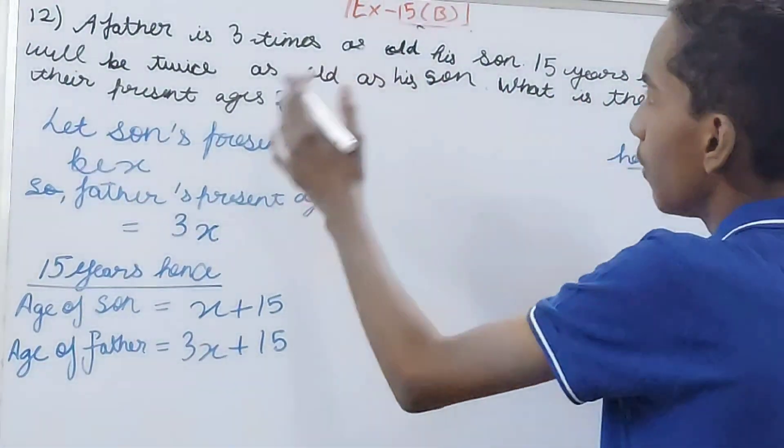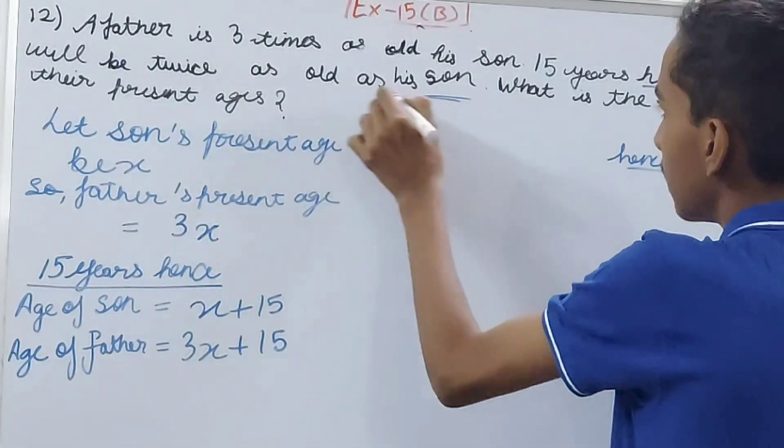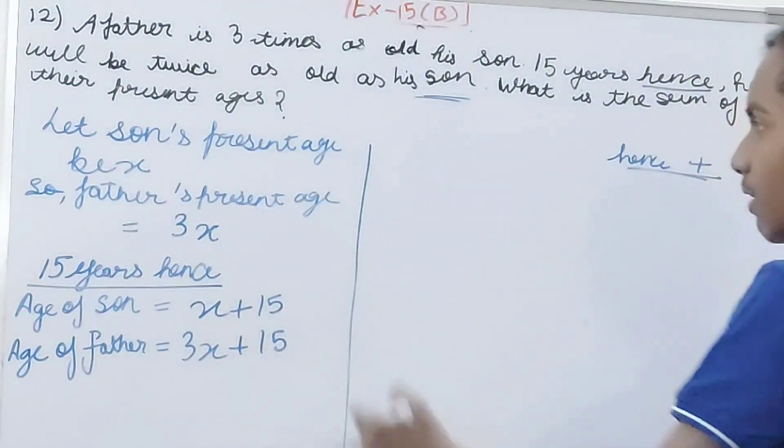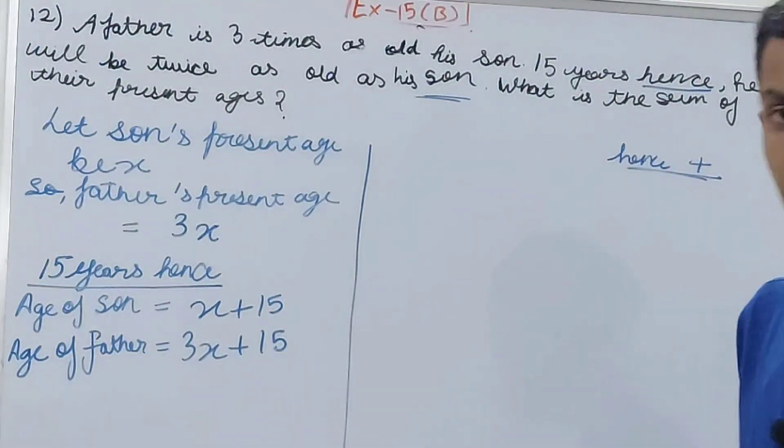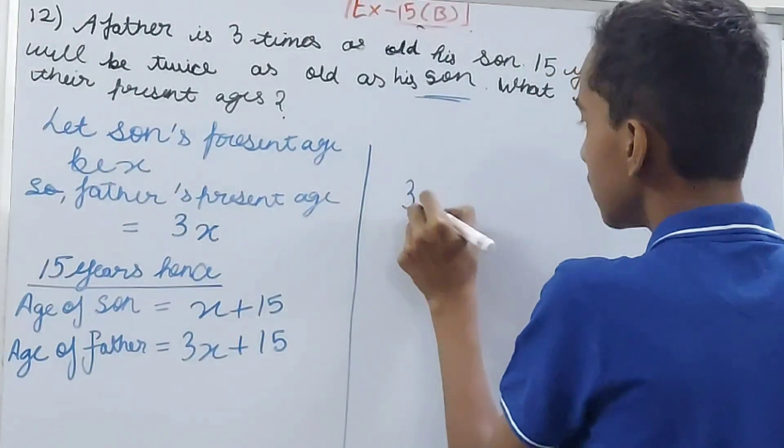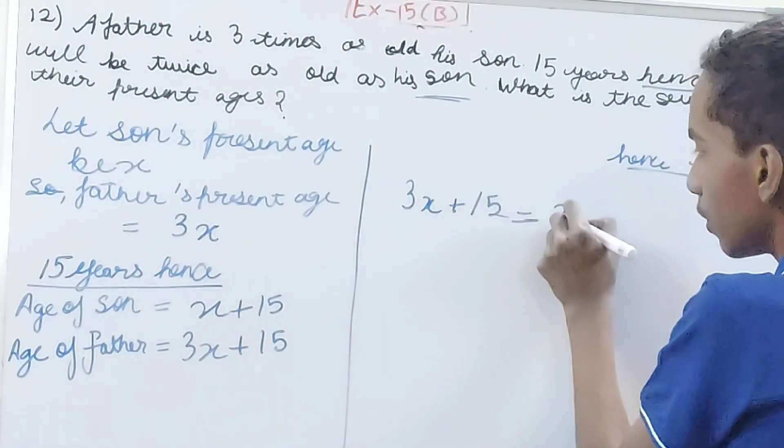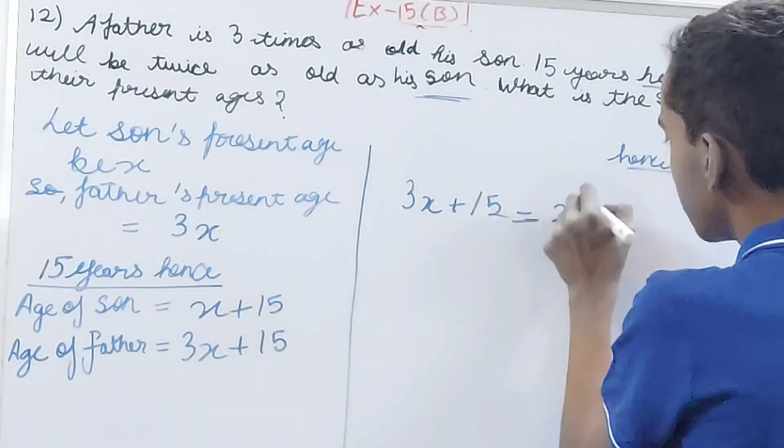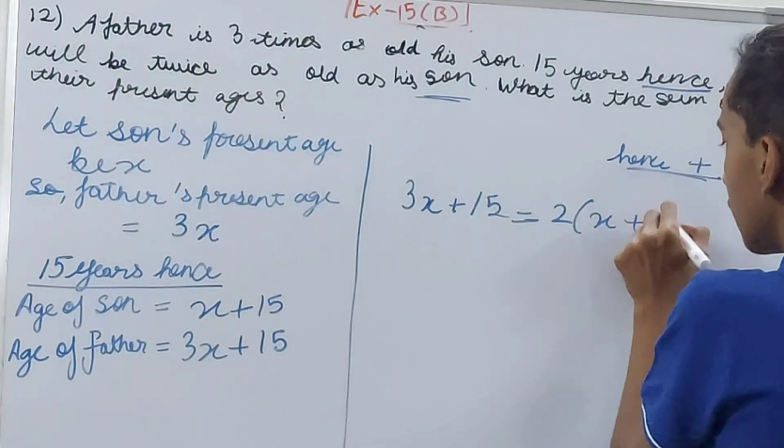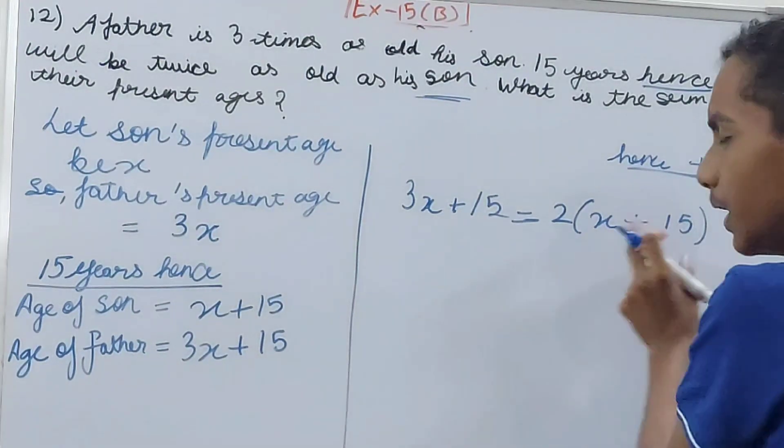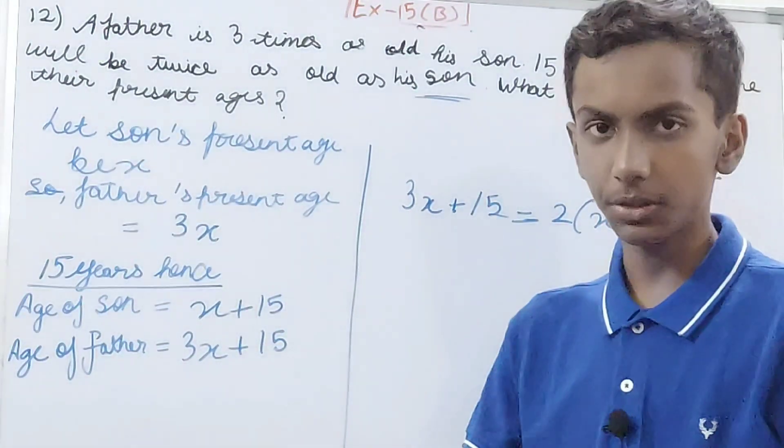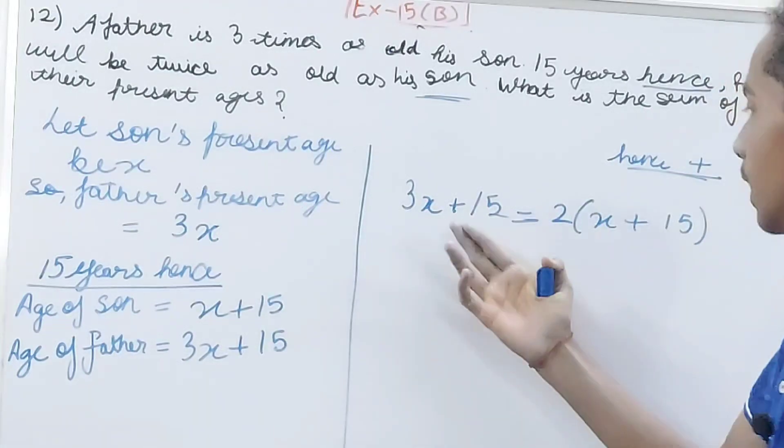He will be twice as old as his son. That means 3x + 15 is the age of father after 15 years, and twice the age of his son, so 2(x + 15). This will be equal to the age of the father after 15 years.